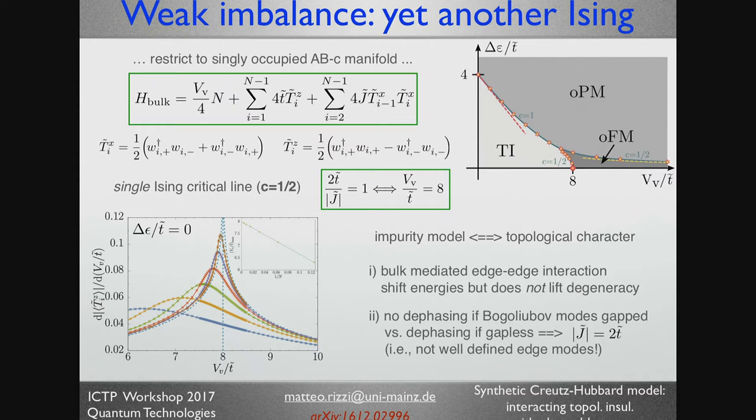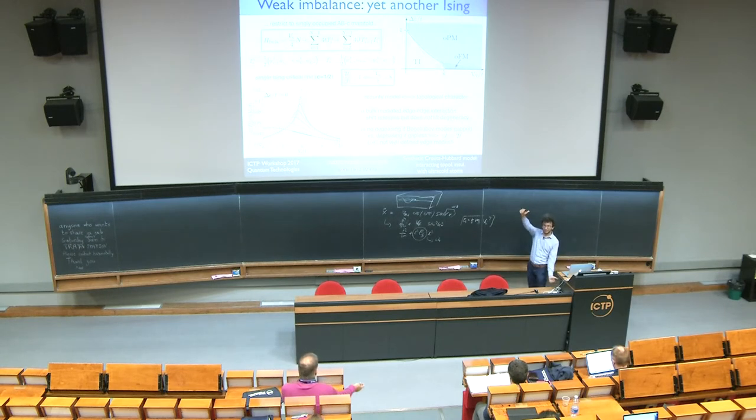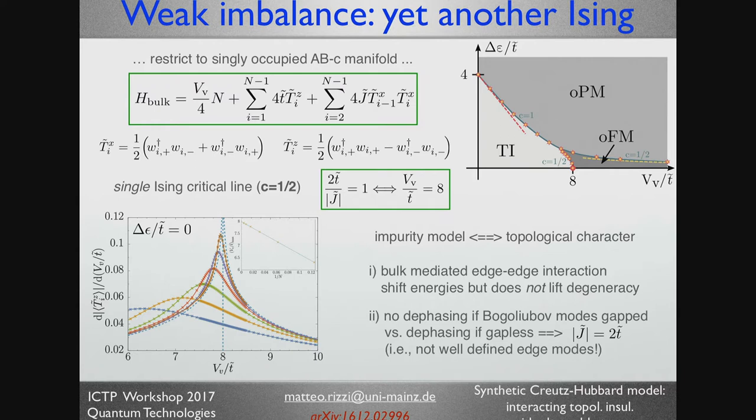Well, okay, that's what I was mentioning before about the impurity model. In a nutshell, if you would write the impurity model, which we have not done here, you will connect it to the topological character in the sense that you will get edge-edge interactions mediated by the bulk, and this will shift energies but not lift the degeneracy. But you can also look at the imaginary part of the coupling and look at dephasing. And you will get dephasing as soon as these Bogoliubov modes get gapped, so as soon as they get gapless, which means as soon as these strange, very curious effective bands are touching each other. And this again explains this transition here in terms of the edge modes get washed out.